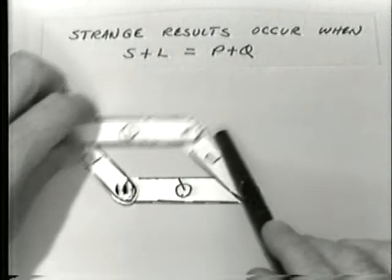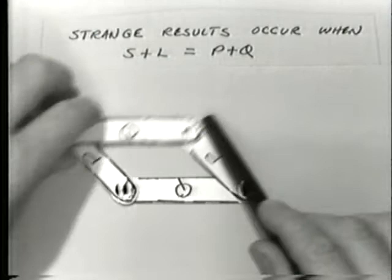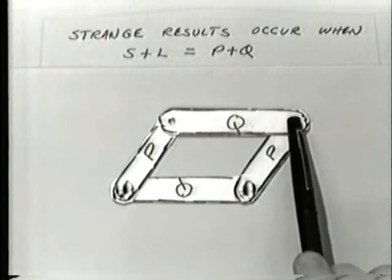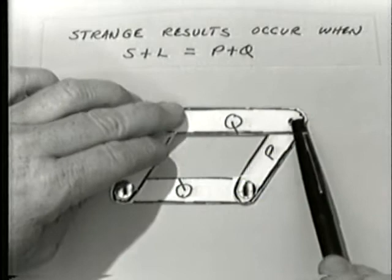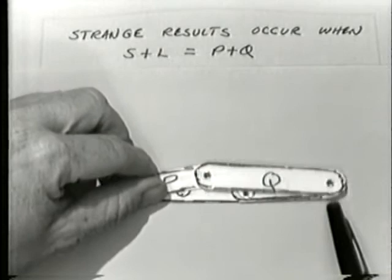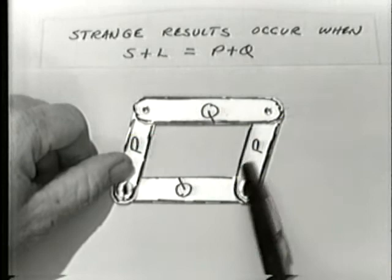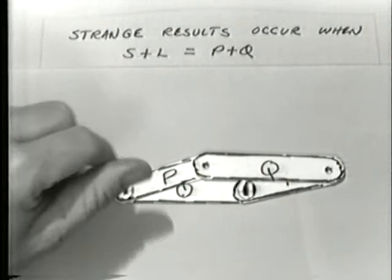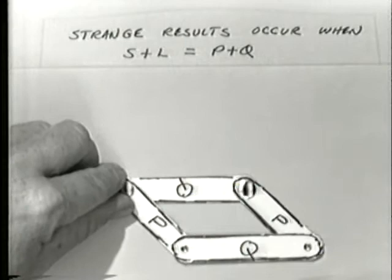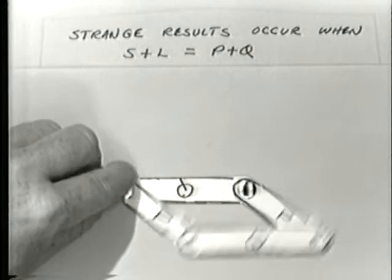This equal-sum linkage is in fact a double crank — you can take the links through full revolutions if you help it through the change points. Without a mechanism to ensure passage through change points, strange results occur in practice. One very old and common application is the parallelogram double crank used on steam locomotives to interconnect drive wheels. The change point problem was solved by having one side's cranks 90 degrees out of phase with the other side, so as one side passes through its change point the other side carries it through.